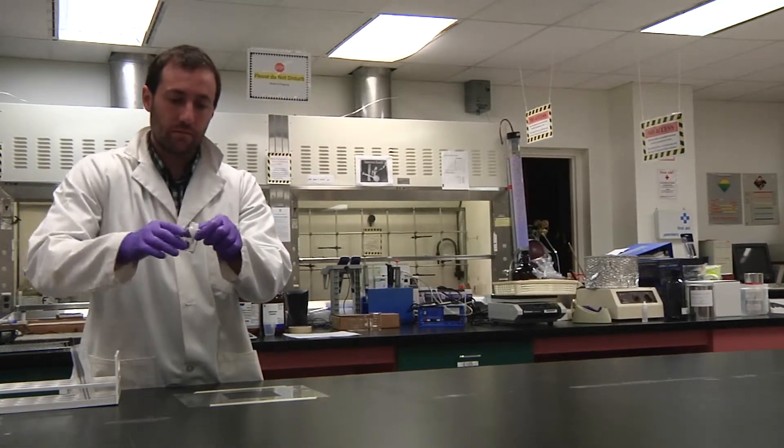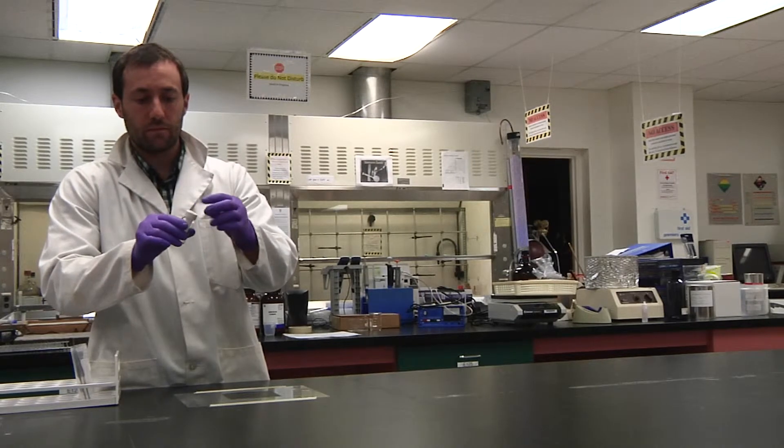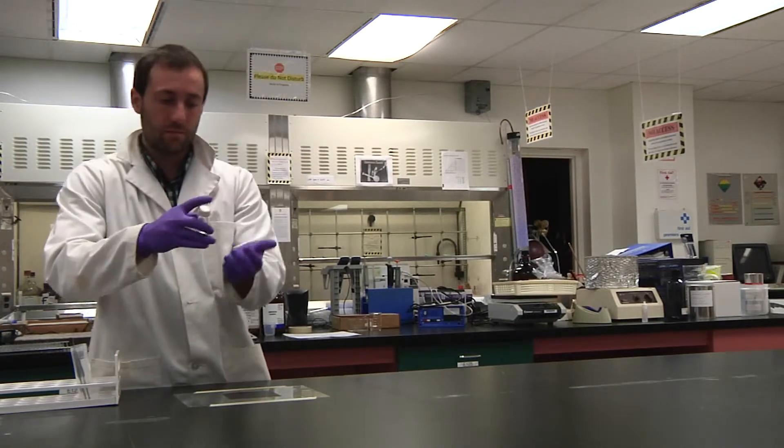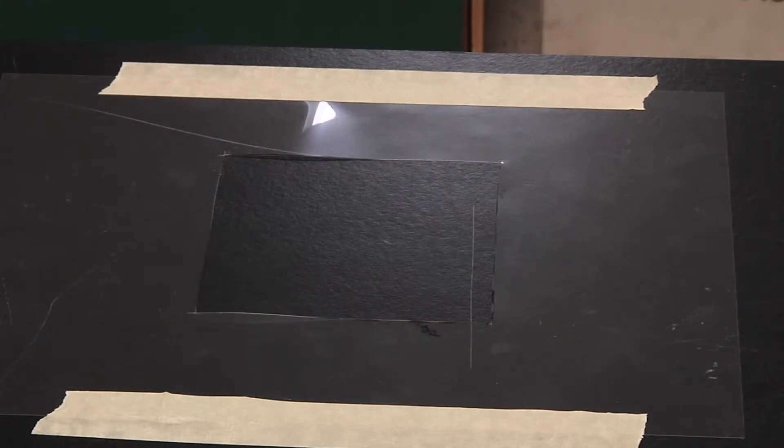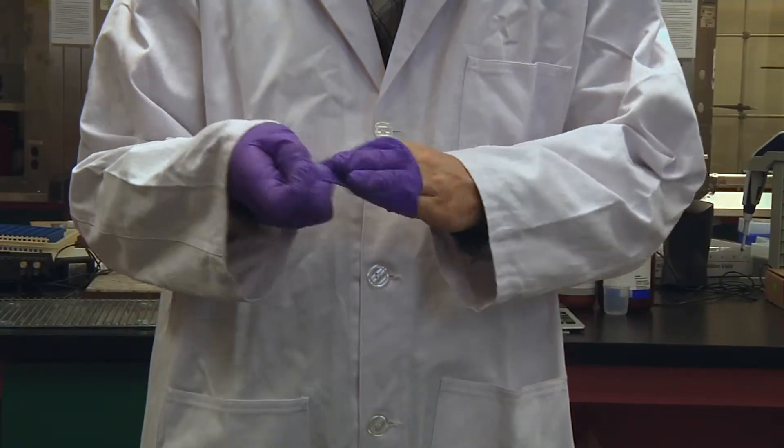Roll or fold the wipe so that it can easily fit back into the sample vial. Insert it and cap the vial. The surface should look dry with no residual solvent or particulate. Dispose of your gloves before moving on.